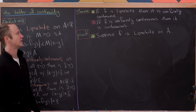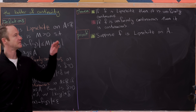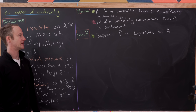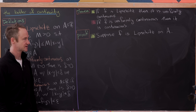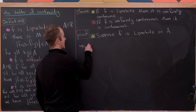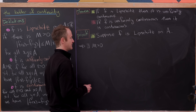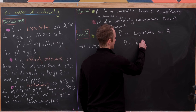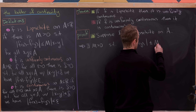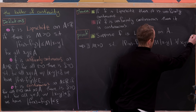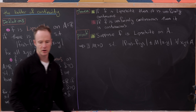Let's start by proving the following classic results: if f is Lipschitz then it's uniformly continuous, and if f is uniformly continuous then it's continuous. So suppose f is Lipschitz on A. That tells us there exists a positive m such that the absolute value of f(x) minus f(y) is less than or equal to m times the absolute value of x minus y, for all x and y in A.